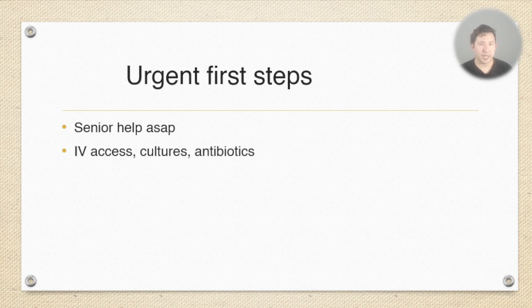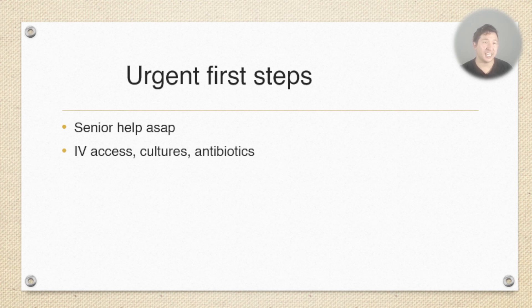One of the urgent first steps is to get your senior to come and help, and get urgent IV access. Antibiotics need to go in, and ideally you need blood cultures. Blood cultures are important but they should not delay the administration of antibiotics — if you don't get enough blood for cultures, still get the antibiotics in. That's the critical treatment, needed urgently, and it should cover meningococcal bugs as per your local guidelines.